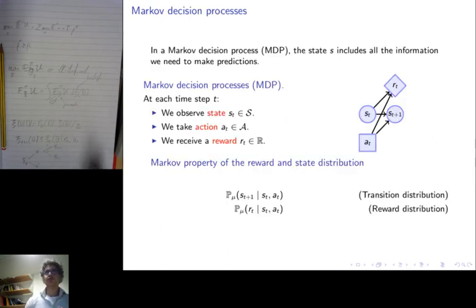Now let's talk about optimization. If you want to optimize something related to Markov processes, then you are necessarily talking about what is called the Markov decision process. In a simple way, the state of the process s includes all the information we need to make predictions.